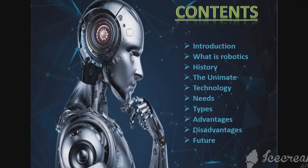Here are the contents: Introduction, then what is robotics, history, the Unimate and its technology, and the needs of robotics, the types of robotics, and after this, advantages and disadvantages, and the future of robots.